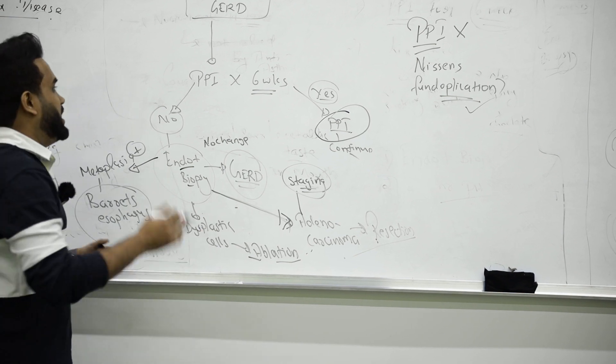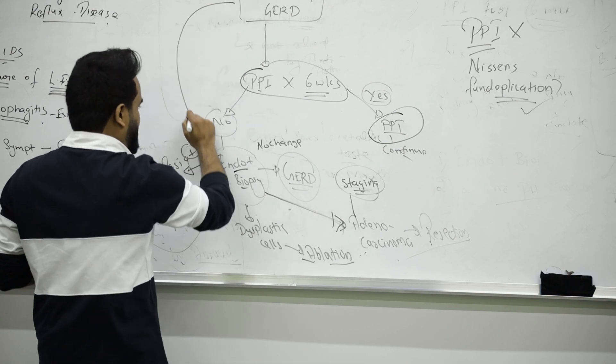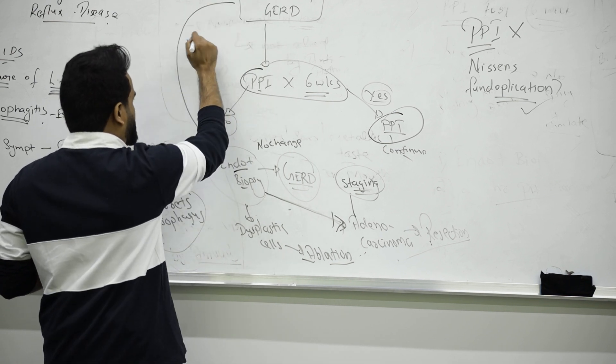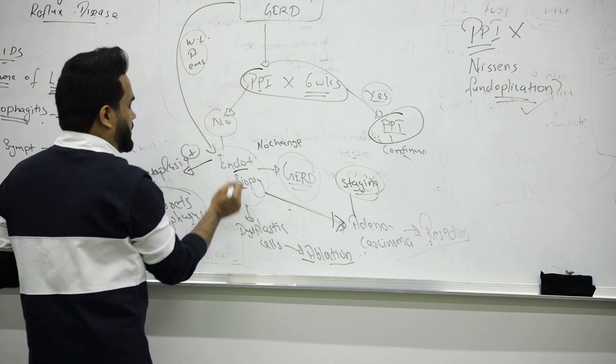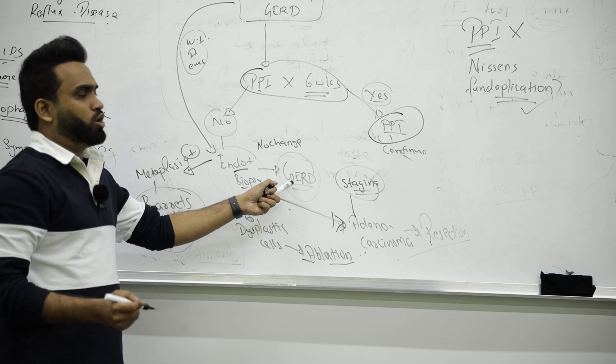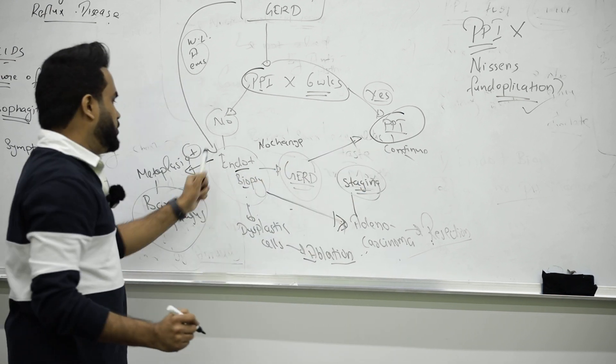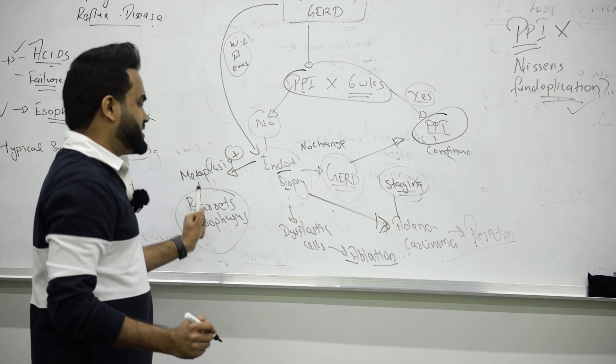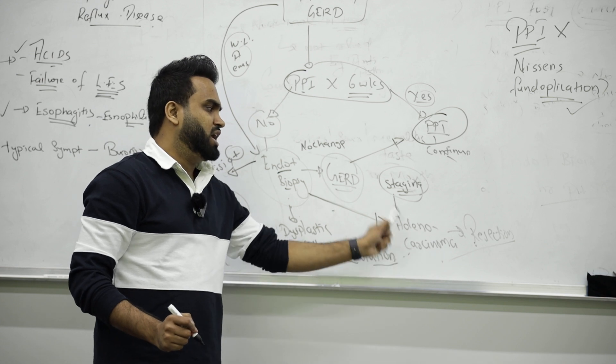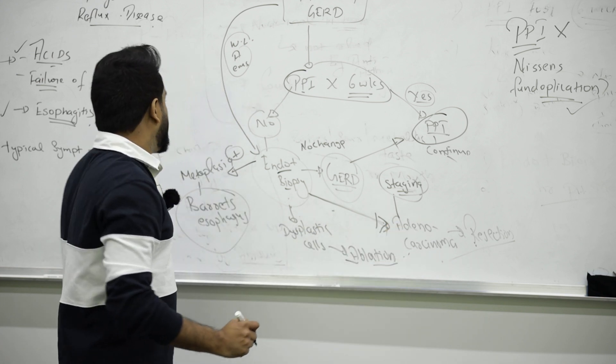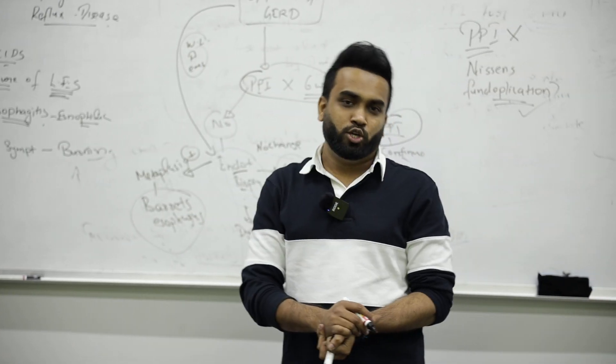PPI is for six weeks for someone with minor symptoms. If the patient has alarming symptoms like weight loss, anemia, or complete vomiting, you can't just give PPI - do endo and biopsy directly. If endo and biopsy shows metaplasia (Barrett's) or dysplastic cells, go for ablation. If it's already adenocarcinoma, stage it and do resection. I think I've covered everything about GERD. Thank you.